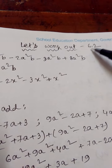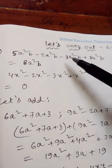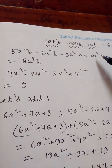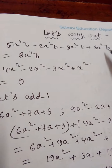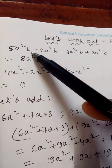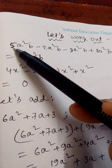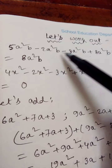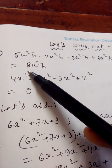Next, let us work out exercise 6.2 in your textbook. Question 1: 5a²b minus 2a²b minus 3a²b plus 8a²b. We shall simplify this mentally. All these are like terms due to the presence of a²b. The numerical coefficients are 5, minus 2, minus 3, plus 8. After simplification: 5 minus 2 is 3, 3 minus 3 is 0, 0 plus 8 is 8. Therefore the simplified value is 8a²b.